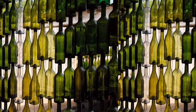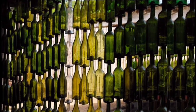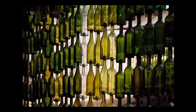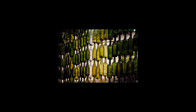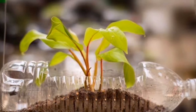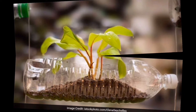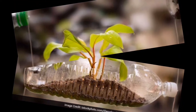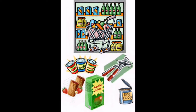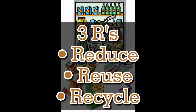Ang di nabubulok ay mga materyales na pwedeng i-recycle tulad ng glass bottle, metal, tin cans, newspaper, at plastic wares. Or pwede natin gamitin ang 3Rs — reduce, reuse, and recycle.